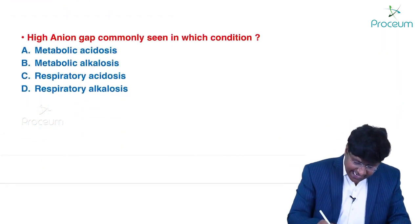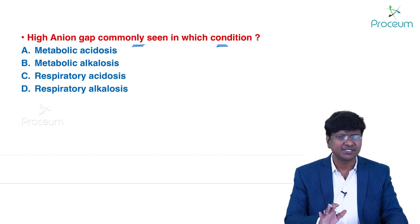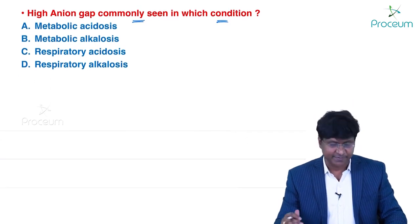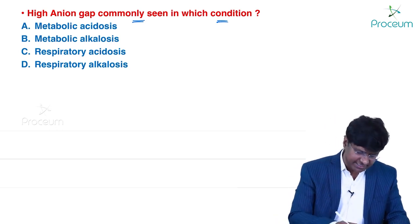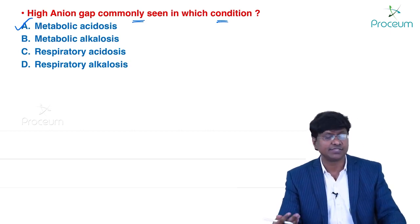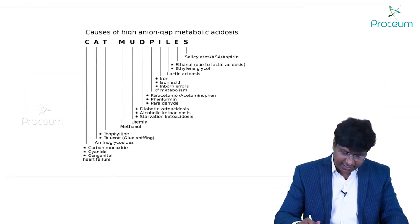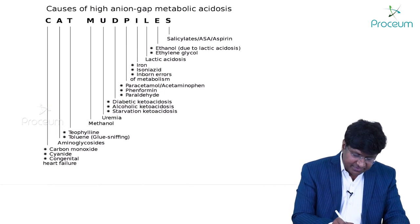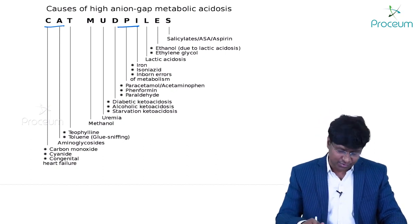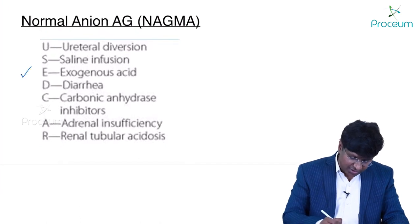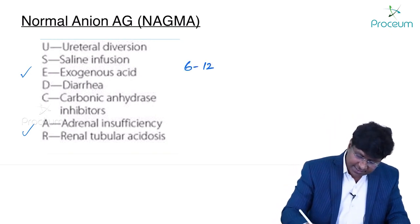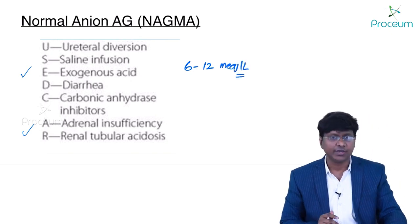High anion gap is commonly seen in which condition? The answer is metabolic acidosis. There are two forms: high anion gap metabolic acidosis (HAGMA) and normal anion gap metabolic acidosis. Causes of HAGMA can be remembered with the mnemonic CAT MUDPILES. Causes of normal anion gap metabolic acidosis use the mnemonic USED CAR. Normal anion gap is 6 to 12 milliequivalents per liter.